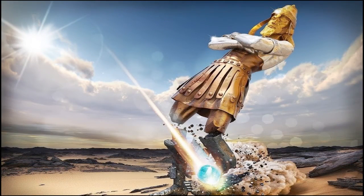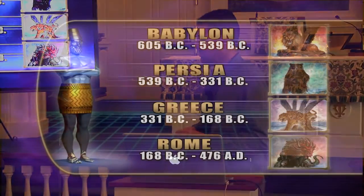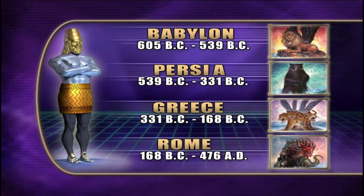Now if you've ever studied Daniel before, you know that Daniel practices something we call repeat and enlarge. The same time periods, the same prophecies are given over and over with different symbolisms, but it covers the same time period, just gives us greater detail each time. You remember the statue in Daniel chapter 2 — head of gold, chest of silver, etc. The same kingdoms are represented here in Daniel chapter 7.